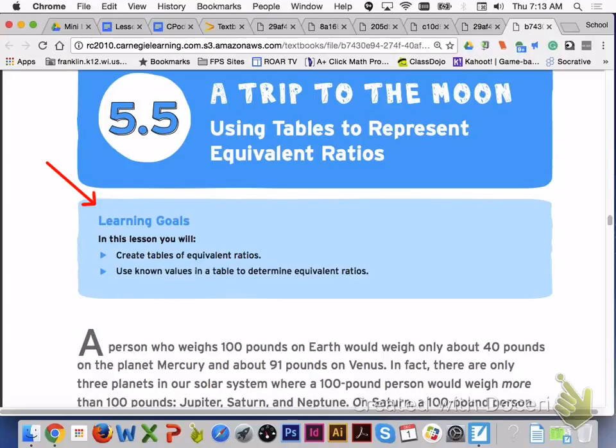In lesson 5.5, you will be learning about using tables to represent equivalent ratios. Learning targets for lesson 5.5, you will create tables of equivalent ratios and use known values in a table to determine equivalent ratios.